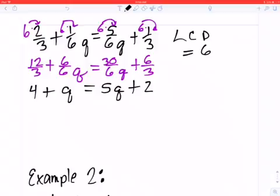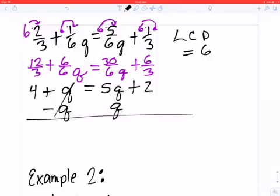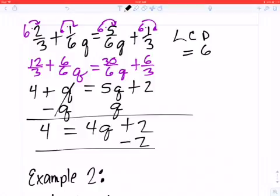I could get rid of the 5Q if I wanted to, but it seems much easier just to get rid of the 1Q. So I'm going to do that. I'm going to subtract a Q from each side, which leaves me with a 4 equals 4Q plus 2. If I look at what I've got left over here, I've got a plus 2 that I need to get rid of. So I'm going to do that by doing a minus 2. I need to subtract 2 from both sides. So that is going to leave me with a 2 is equal to 4Q.